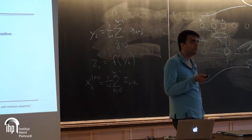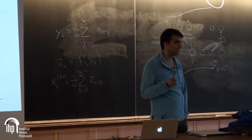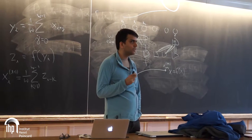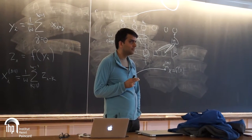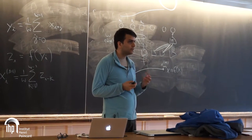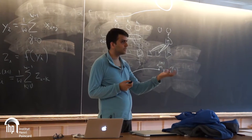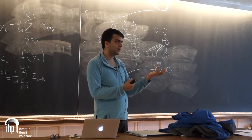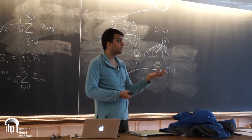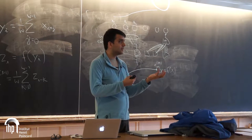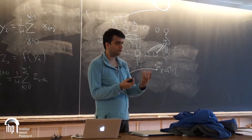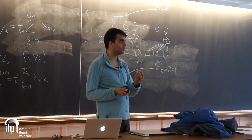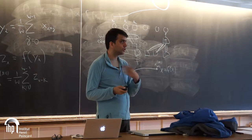If you want to get close to the information theoretic bound on the number of tests, there's a certain entropy of the source, and each test can give you at most one bit of entropy. So just by an entropy counting argument, if your group size is too small or too large, you can't collect enough entropy, and you'll need too many tests.